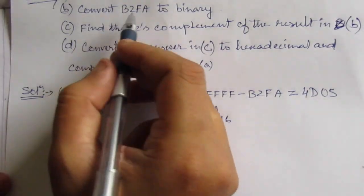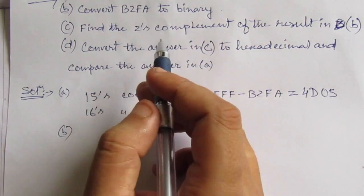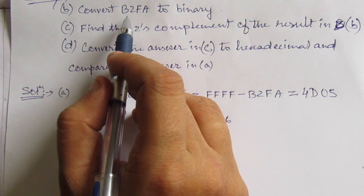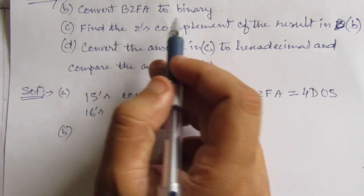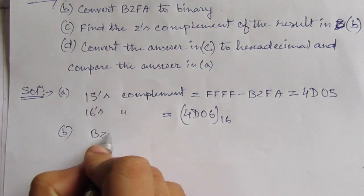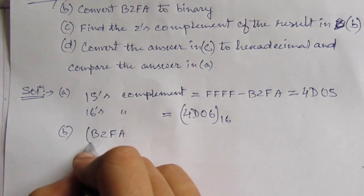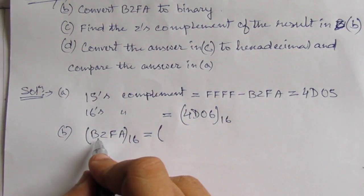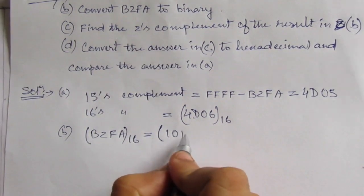Second part is convert B2FA to binary. So in case of hexadecimal to binary conversion, we have to convert each digit in this hexadecimal number into its 4-bit binary equivalent. So B2FA in hexadecimal will be equal to...